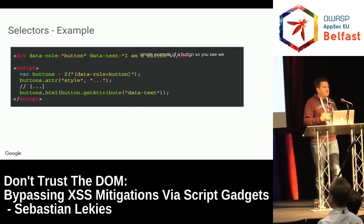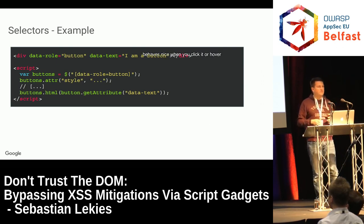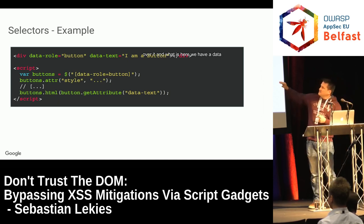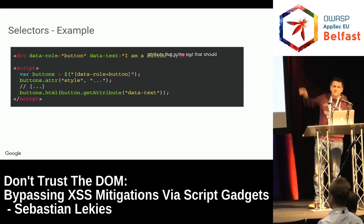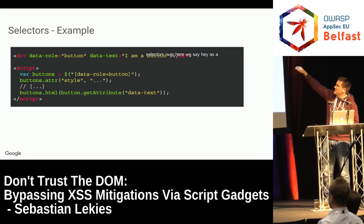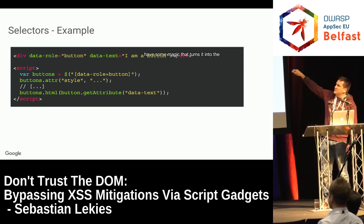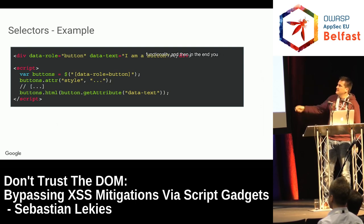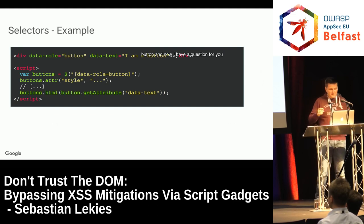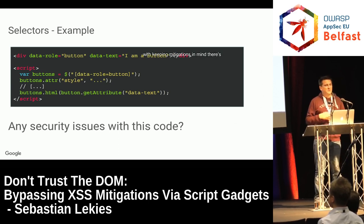Here is a simple example of a button: we have a data-role attribute that says 'I'm a button,' which may enrich the button with CSS functionality. There's also a data-text attribute with the text to render on the button. How would you implement this? You use jQuery and selectors — you say, as a framework, give me all the things that have this data attribute set on the page, then add styles and functionality, and in the end take the data-text attribute and render it as the text of the button. So are there any security issues in this code? Do you think it's perfectly safe, especially keeping mitigations in mind?